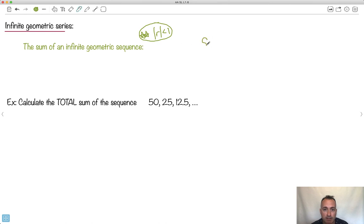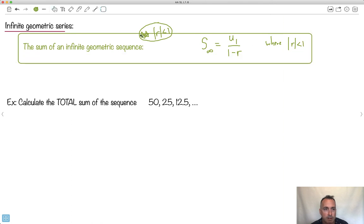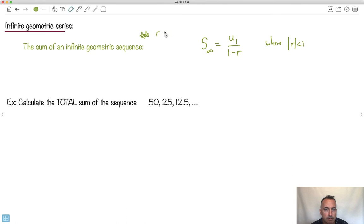We actually have an equation for it. We say S infinity - the infinity symbol is called a lemniscate - it actually just becomes u1 over 1 minus r. That's it. So as long as absolute value of r is less than 1, this is the formula we're going to use. This is the formula for the infinite terms. Let's see if we can actually do this.